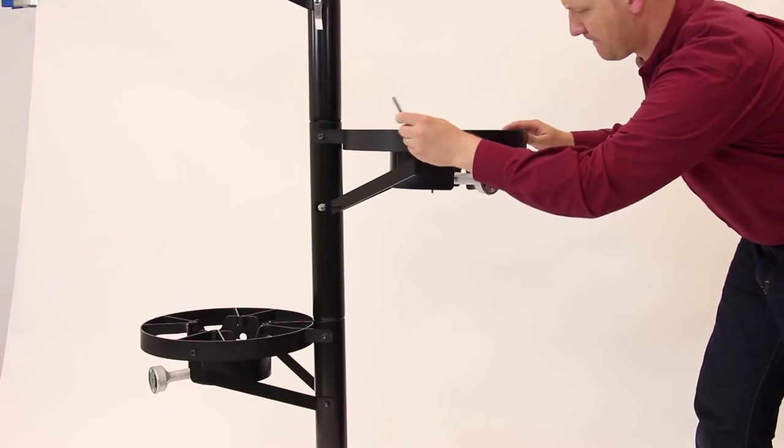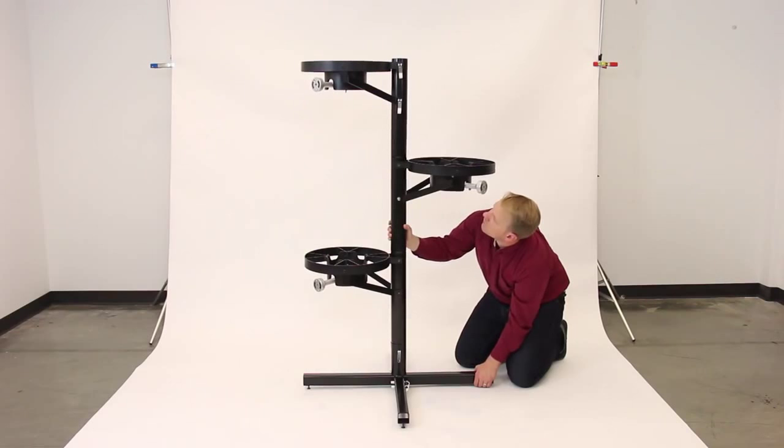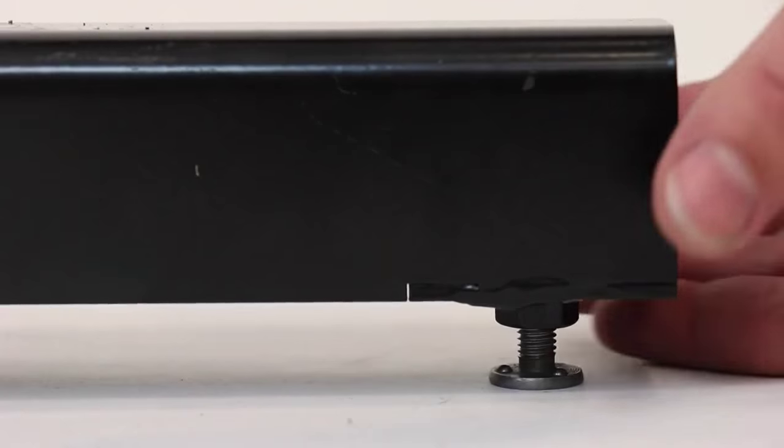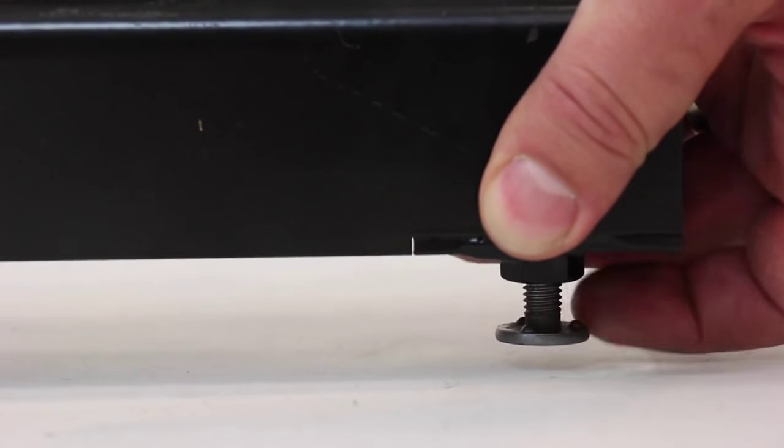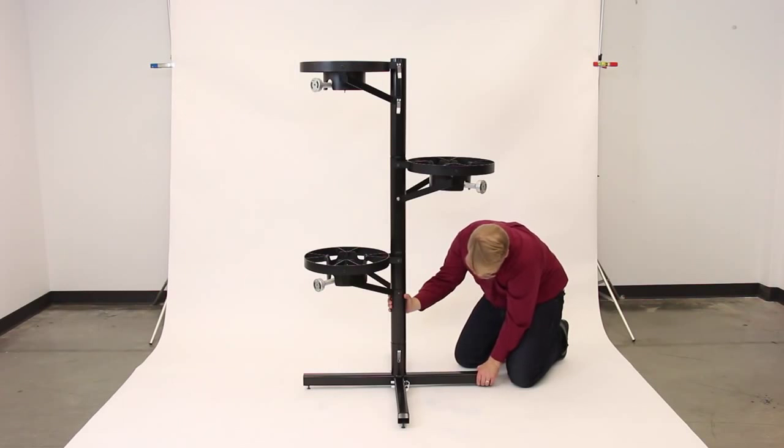Then use the allen wrench to give the hex screws on the burner plates one final tightening. At this point, it's a good idea to examine the full center of gravity assembly to assure the assembly is straight and there is no wobble in the legs. You can adjust the feet on the base to straighten if necessary.